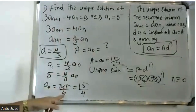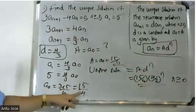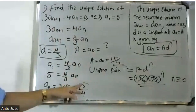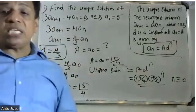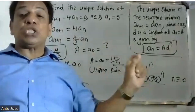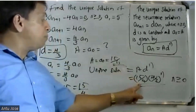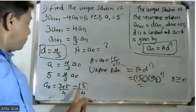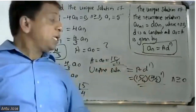Therefore the unique solution is a_n = a * d^n, where a is equal to 15/4, d is equal to 4/3, giving the final answer: a_n = (15/4) * (4/3)^n.